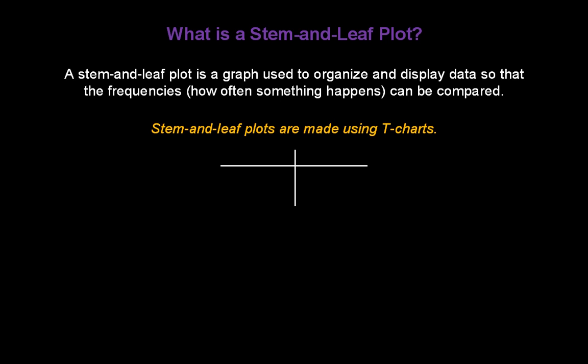Stem-and-leaf plots are made using T-charts like the one shown on your screen. The first column contains the stems while the second column contains the leaves.